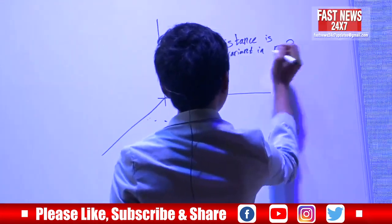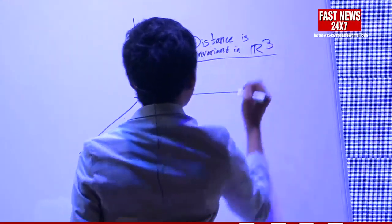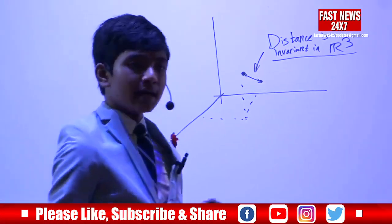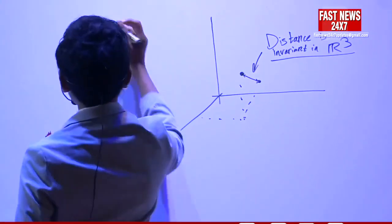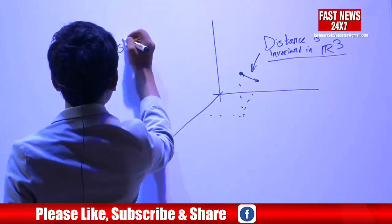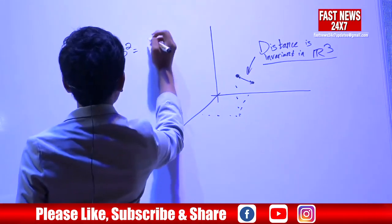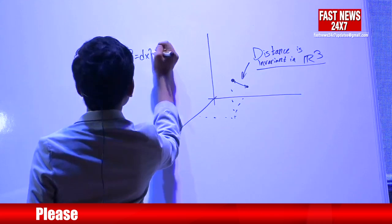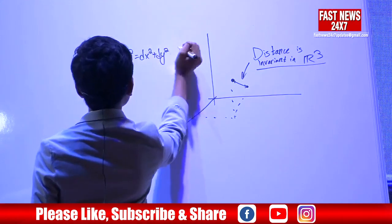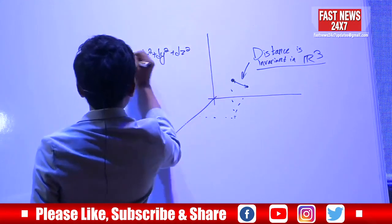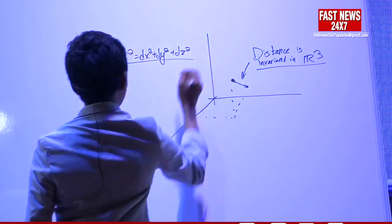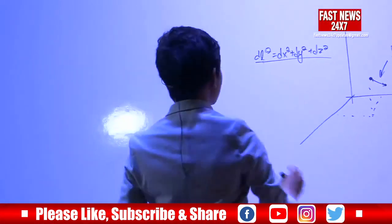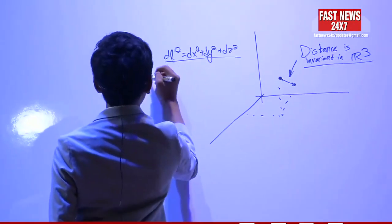But this changes when you introduce the fact that the speed of light has to be constant. Instead of our constant being dl squared equals dx squared plus dy squared plus dz squared as our space-time interval, to keep the speed of light constant we have to add an additional component.